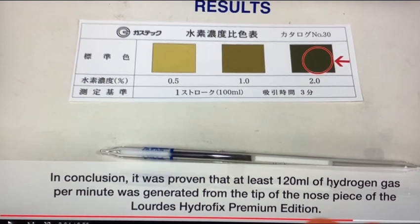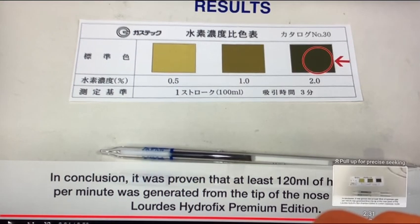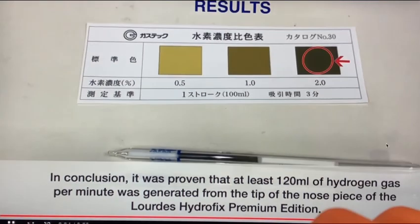In conclusion, it was proven that at least 120 milliliters of hydrogen gas per minute was generated from the tip of the nose. So again, this is actually from the tip of the nose.